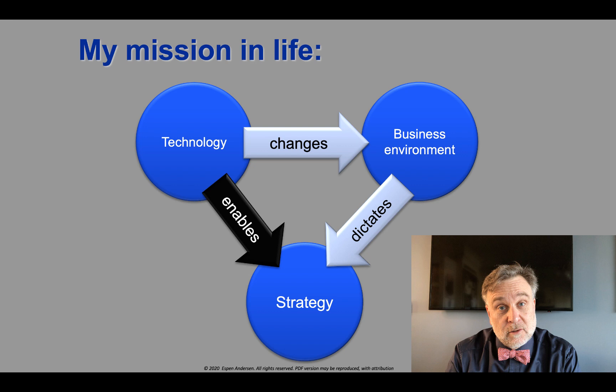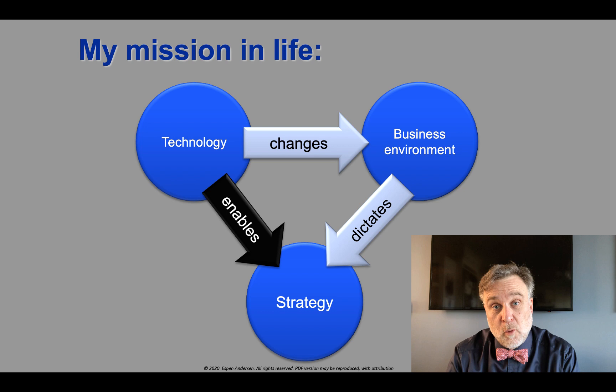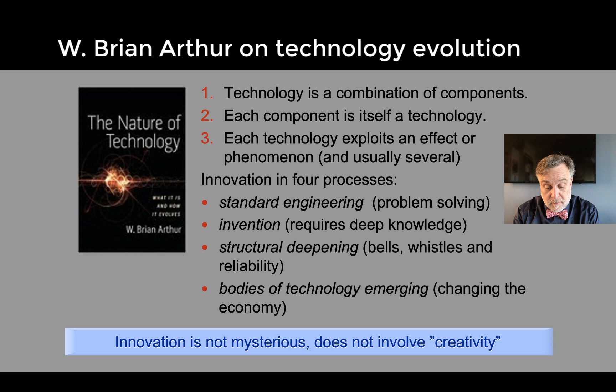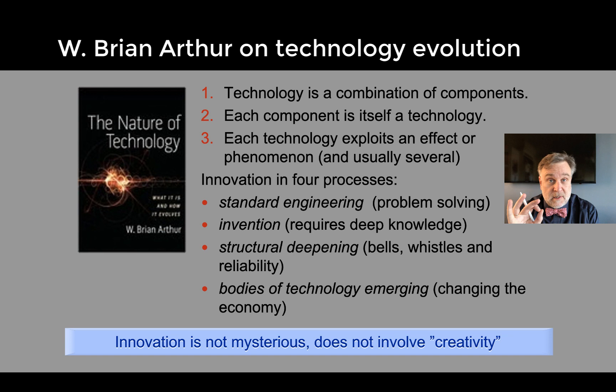This is a little introduction in very simple language so almost everybody can follow it. Let's start with technology evolution over time — how does technology change? I'll start by talking about a book by W. Brian Arthur. He is a technology economist and historian, and he's written an excellent book called The Nature of Technology, where he defines what technology is and posits that technology changes because of four separate processes that go on at the same time.